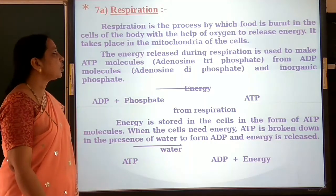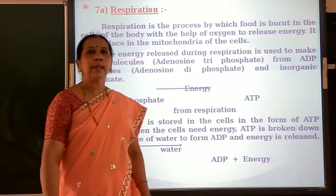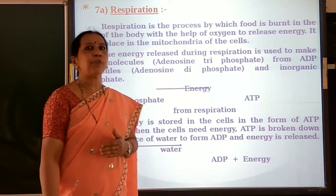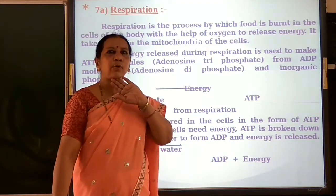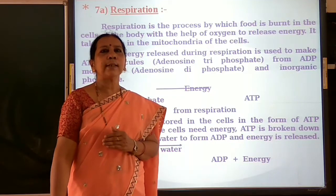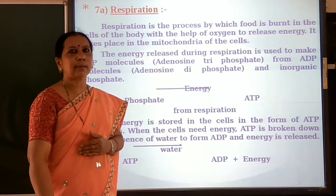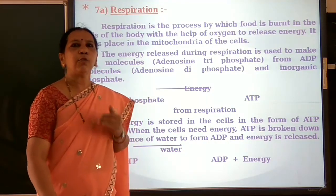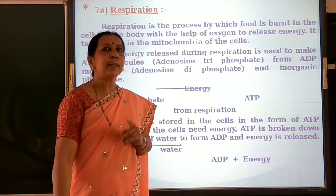Respiration is the process by which food is burnt in the cells of the body with the help of oxygen to release energy. It is an energy releasing process where food is oxidized or burnt in the presence of oxygen to release energy. This takes place in the mitochondria of the cells. Mitochondria are called the energy releasing factories, since they release energy from food. Cellular respiration takes place in mitochondria where food is oxidized and converted into energy in the presence of oxygen.